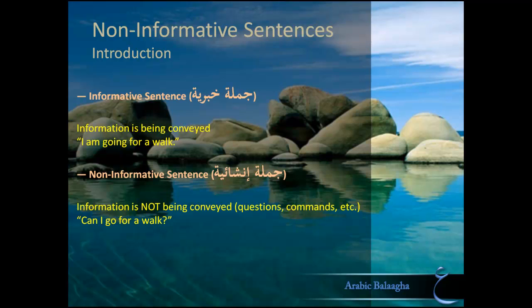There's a simple test that can tell you whether a sentence is informative or non-informative. Informative sentences have true and false, while non-informative sentences don't. For example, when I say 'I'm going for a walk,' you can actually say, 'Yeah, that's true,' or 'No, that's a lie.' But when I give a command like 'Go to the park,' or ask a question like 'Can I go to the park,' you can't say 'that's true' or 'that's a lie' — it doesn't make sense. So you know this is a non-informative sentence.